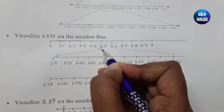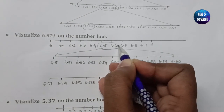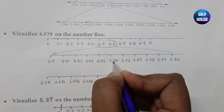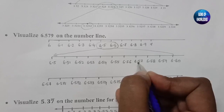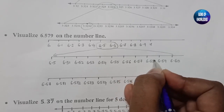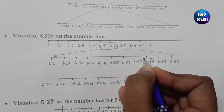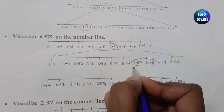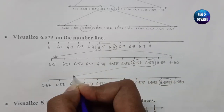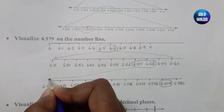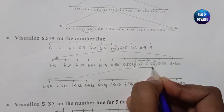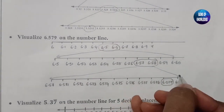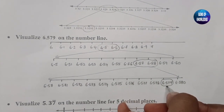We took 6.57 and 6.58, and extended them in this way — this part here and this part here. So we got the answer for the second example.